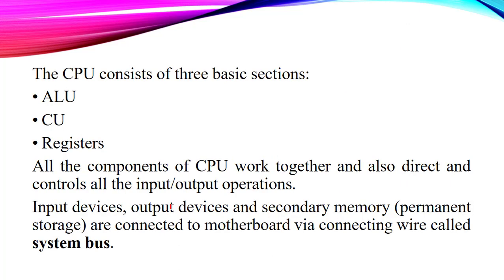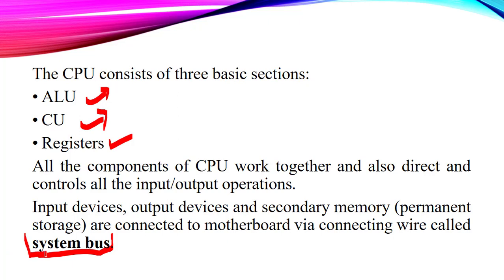The CPU has three basic sections: ALU, CU and registers. All the components of the CPU work together and also direct and control all the input-output operations. All these input devices, output devices and secondary memory — our permanent memory — are connected to the computer's motherboard. These are connected via some cables termed as the system buses. System buses are the wires or cables available inside the CPU cabinet.